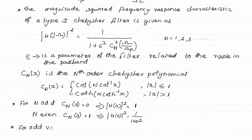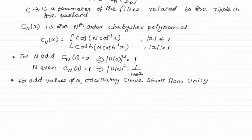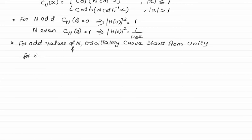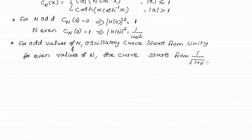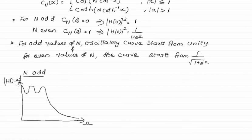For odd values of n, the oscillatory curve starts from unity because the magnitude is equal to 1. For even values of n, the oscillatory curve starts from 1/√(1+ε²) because n is even.